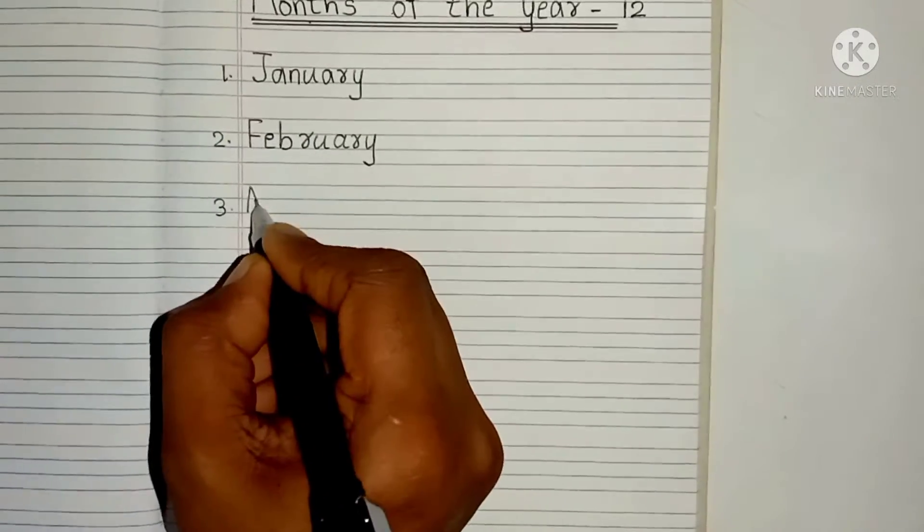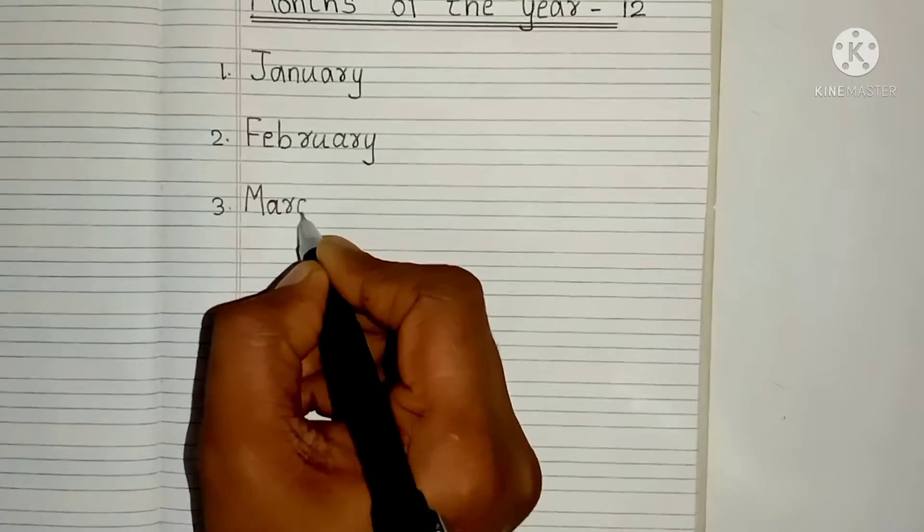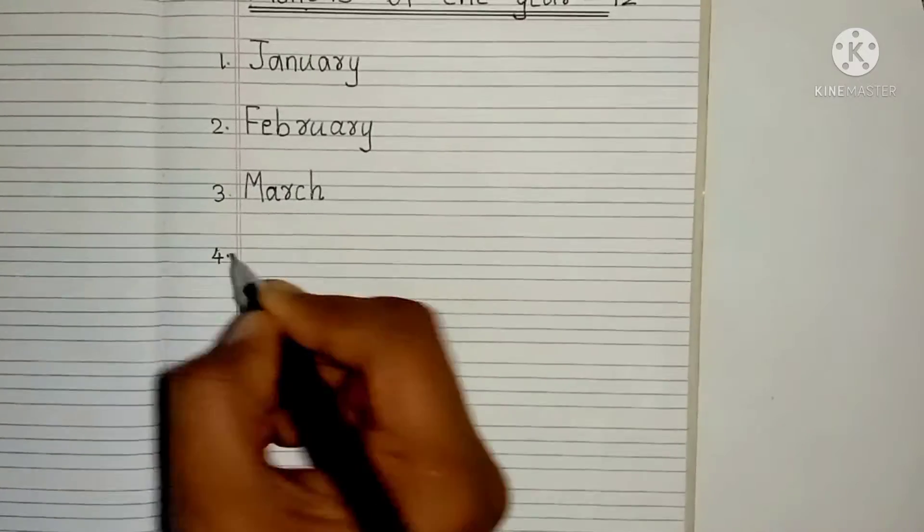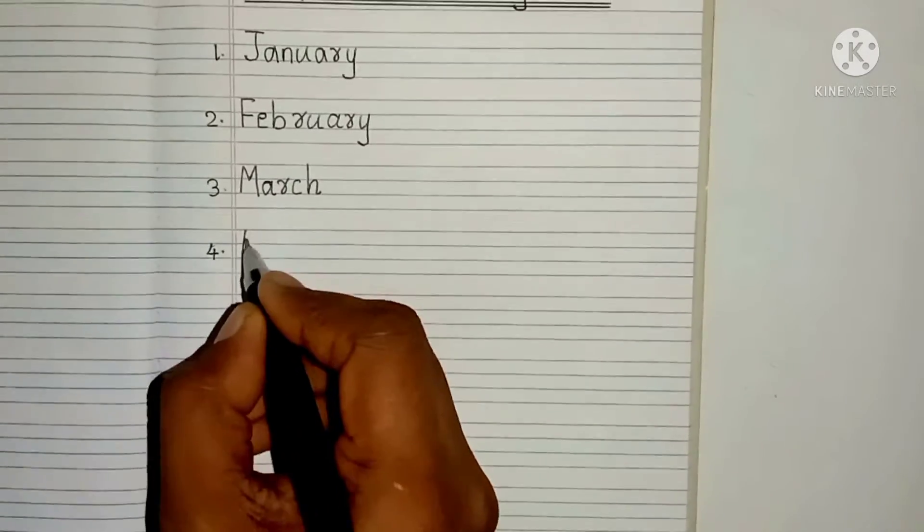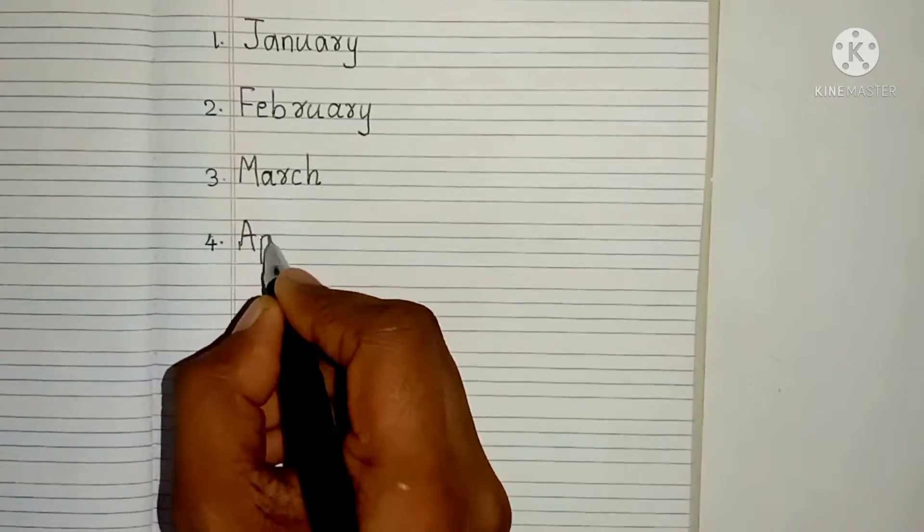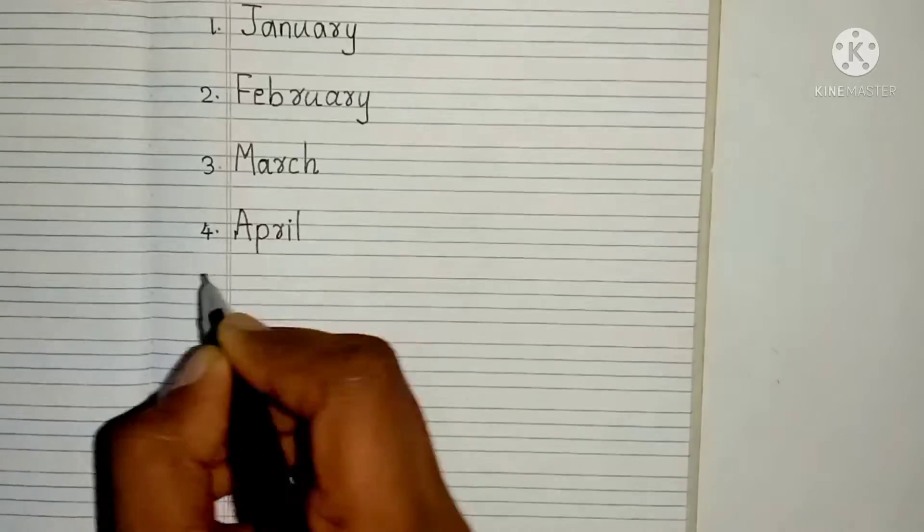Third month is M, A, R, C, H. March. Fourth month is A, P, R, I, L. April.